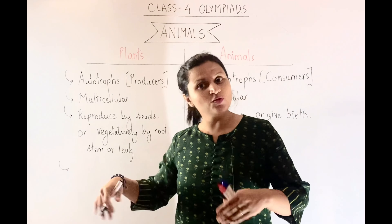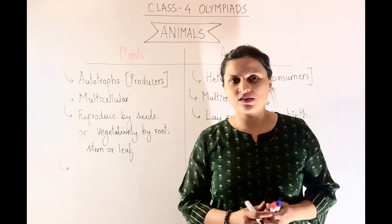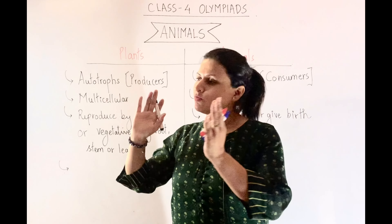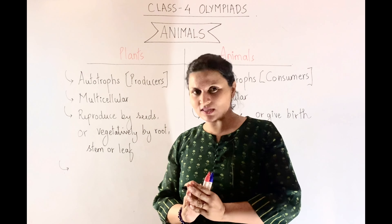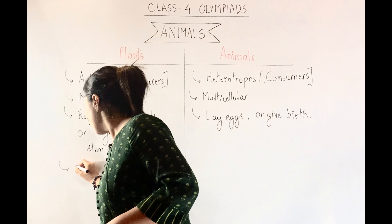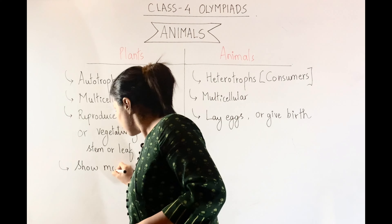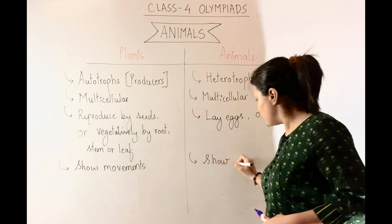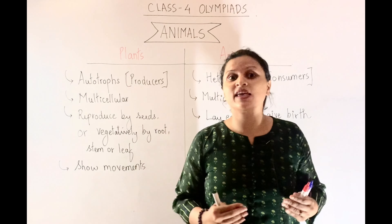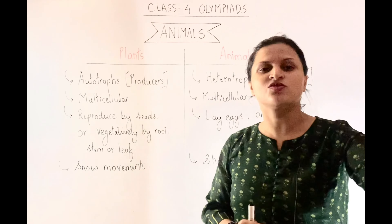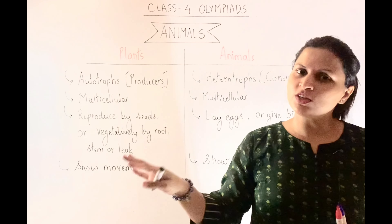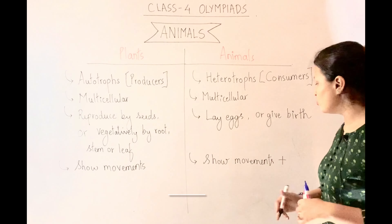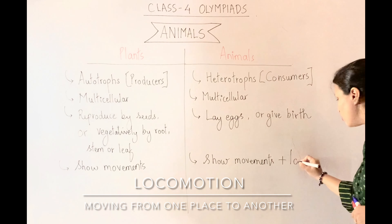Do plants show movements? The roots moving towards water is a movement, and the shoot moving towards sunlight is also a type of movement. However, the movement will be at one stationary place only. How about animals? Yes, animals show movements too, plus they are able to move from one place to another. Moving from one place to another is known as locomotion.